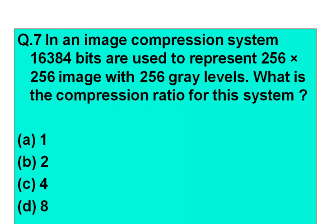Question number seven: In an image compression system, 16,384 bits are used to represent a 250×250 image with 256 gray levels. What is the compression ratio for this system? Option A: 1. Option B: 2. Option C: 4. Option D: 8. You can take a screenshot.